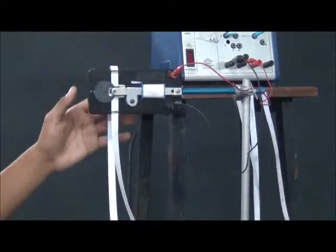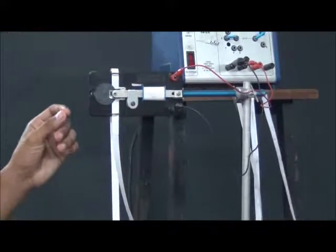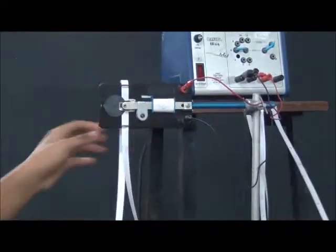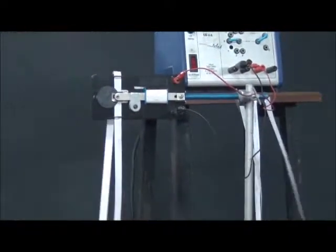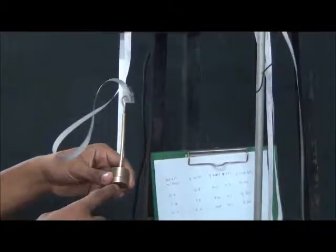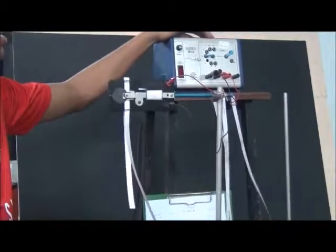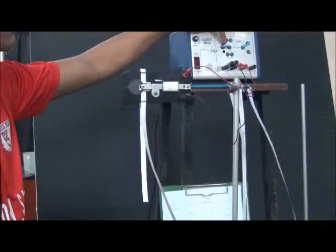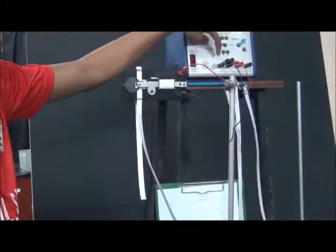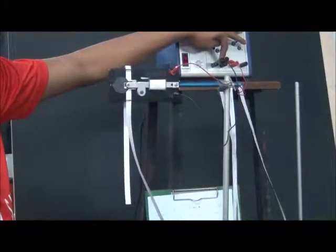This is the setup for the experiment. This is a ticker timer, a ticker tape, and a weight holder. This is 0.1 kilogram or one unit. And we connect it to the power supply to 6 volt and alternating current.